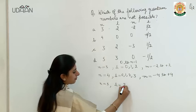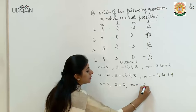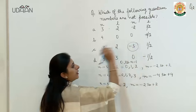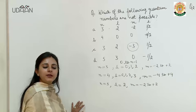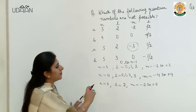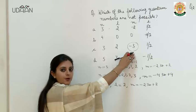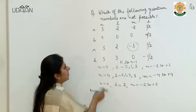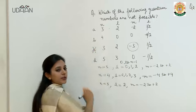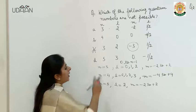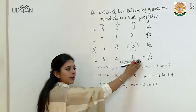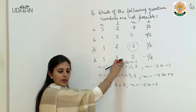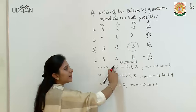Now let us understand: if n value is 2, then m value is 2. And if n value is 5, then l value is 3, then m value is 3.